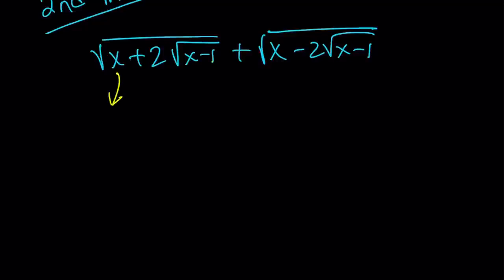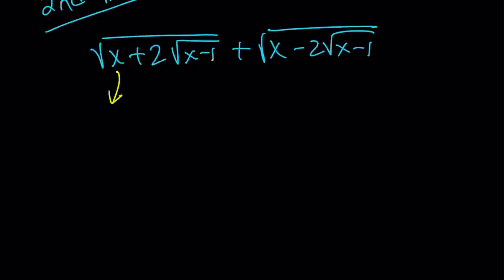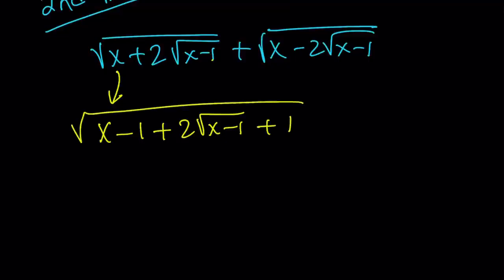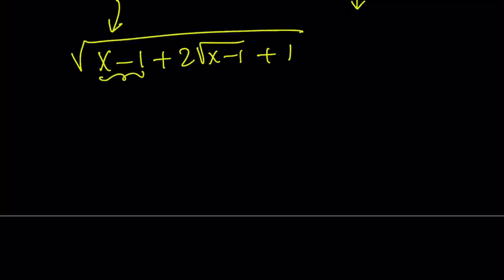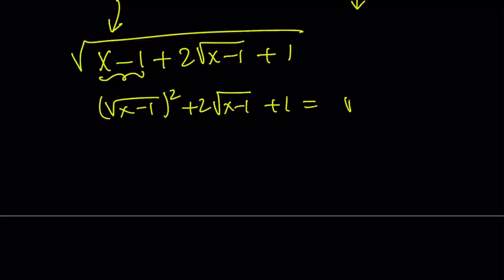So here's what I'm going to do. I'm going to write the x as x minus 1 plus 1. Because x minus 1 is basically the expression inside the radical without the square, plus 1. So we're going to get that. Now notice that this is the square root of x minus 1 squared. So let's go ahead and write it that way, and we're going to get the following.